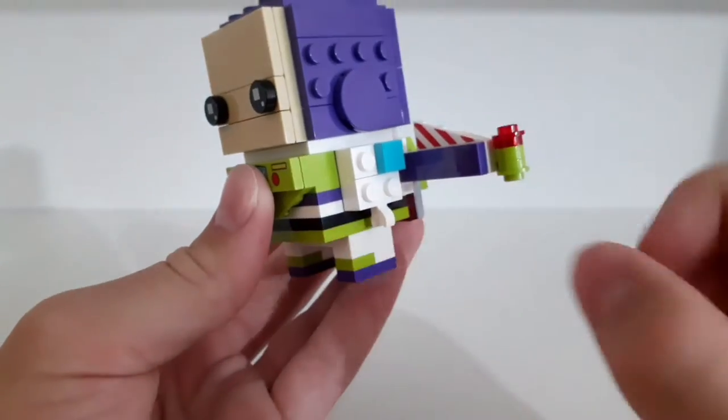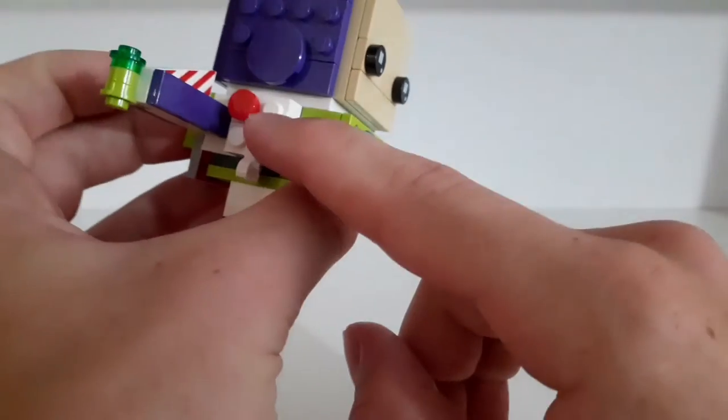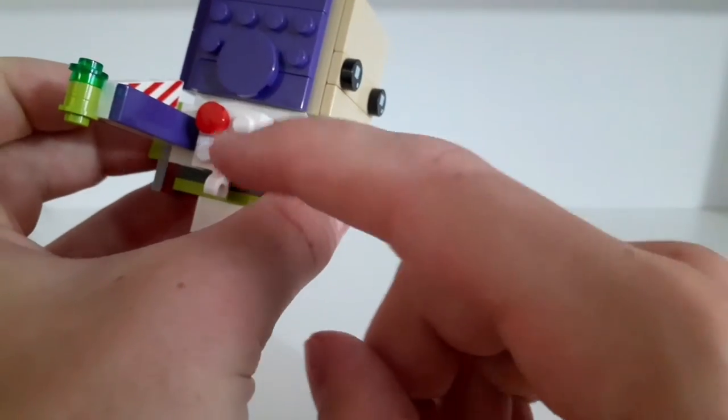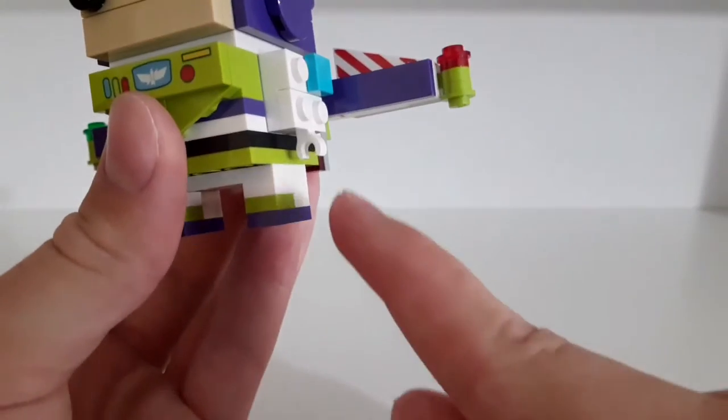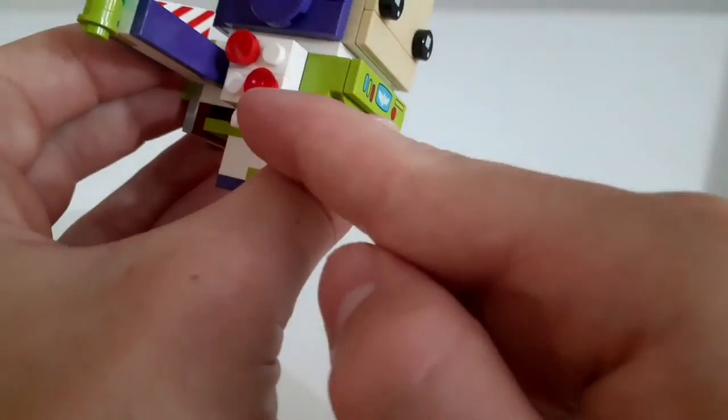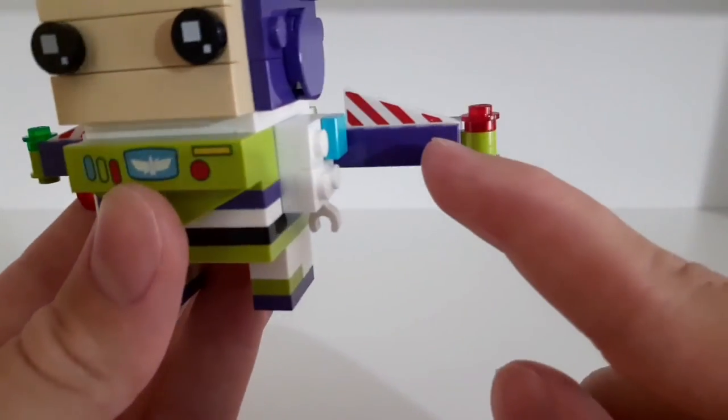Here on the side of course we have his hands with some buttons on it, two red ones on this one and one blue on that one. His hands are attached with these clips and here we have the wings.